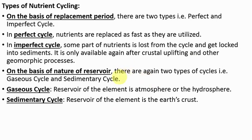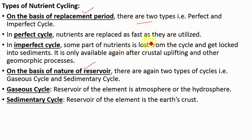Now let's see what are the types of nutrient cycling. On the basis of replacement period, we categorize nutrient cycling into different types. First we will cover replacement period, then the nature of reservoir. In the context of replacement period, there are two types of nutrient cycling: the perfect cycle and the imperfect cycle.